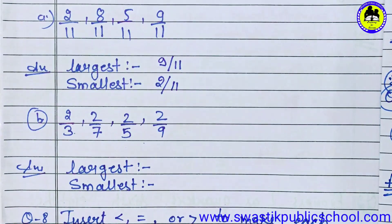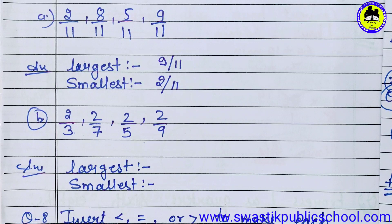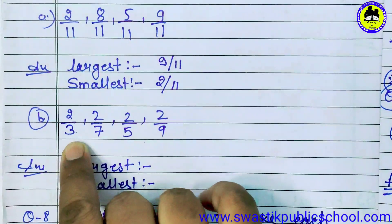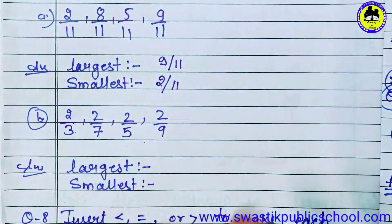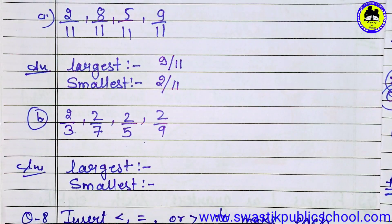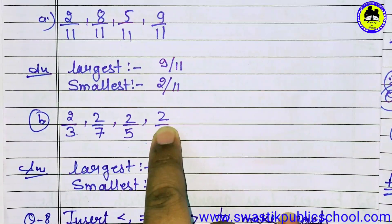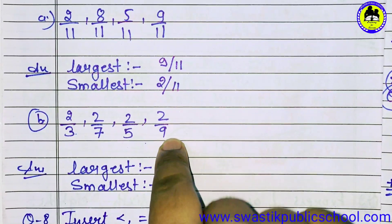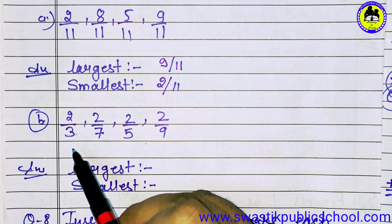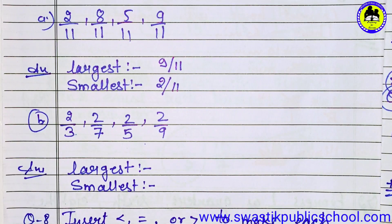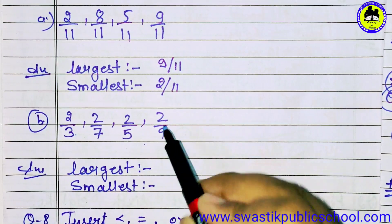Let us understand with an example. Suppose you have 2 pages and you divide those 2 pages equally into 3 parts. Take any 2 things — you divide them equally into 3 parts, and similarly equally into 7 parts. It means the more parts you divide into, the smaller each part becomes. So if we make 9 parts of 2, that will be the smallest, and 3 parts of 2 will be the biggest.